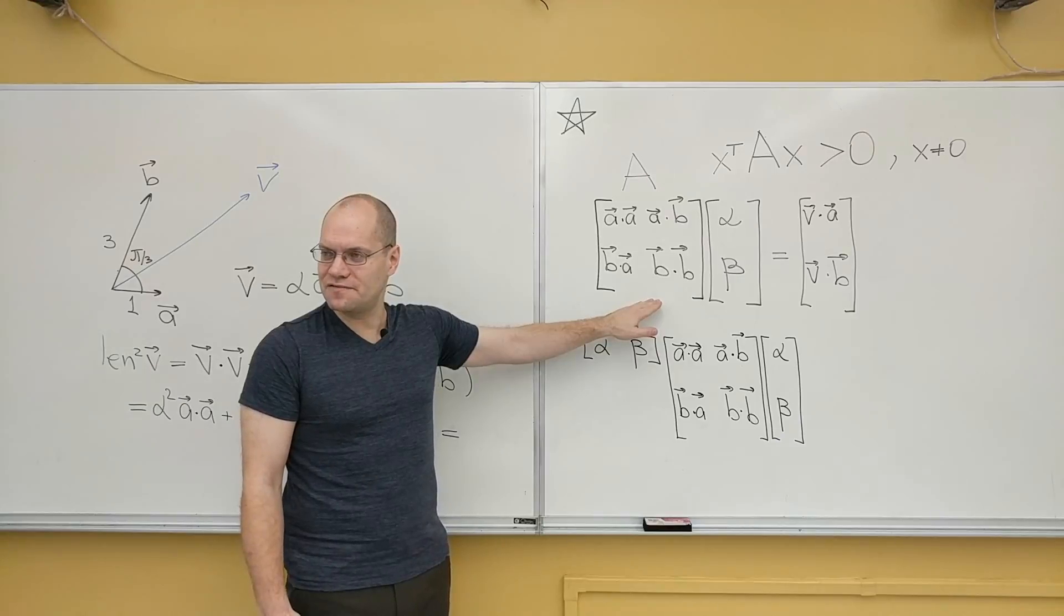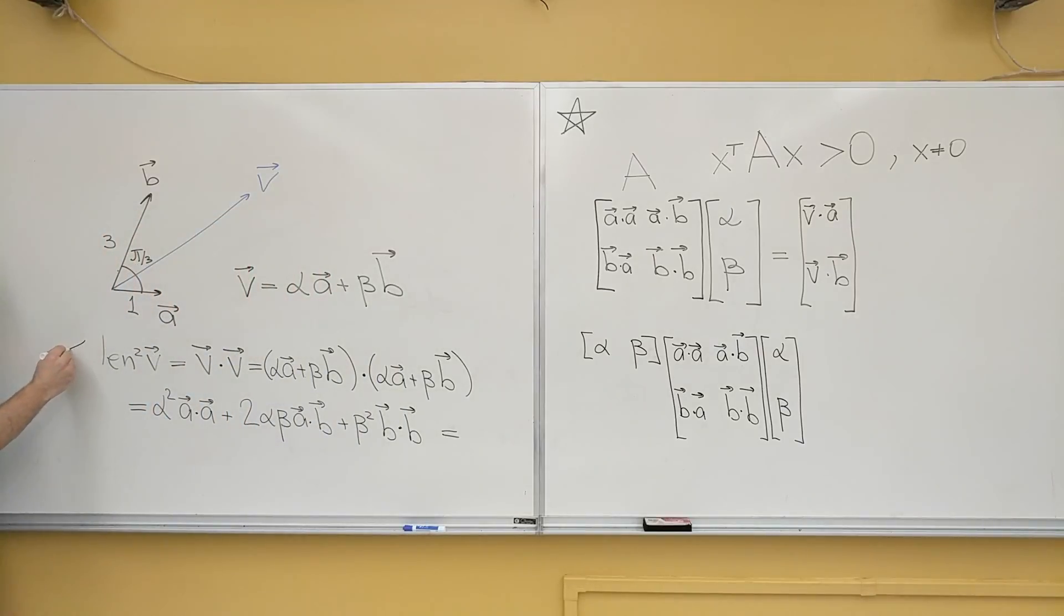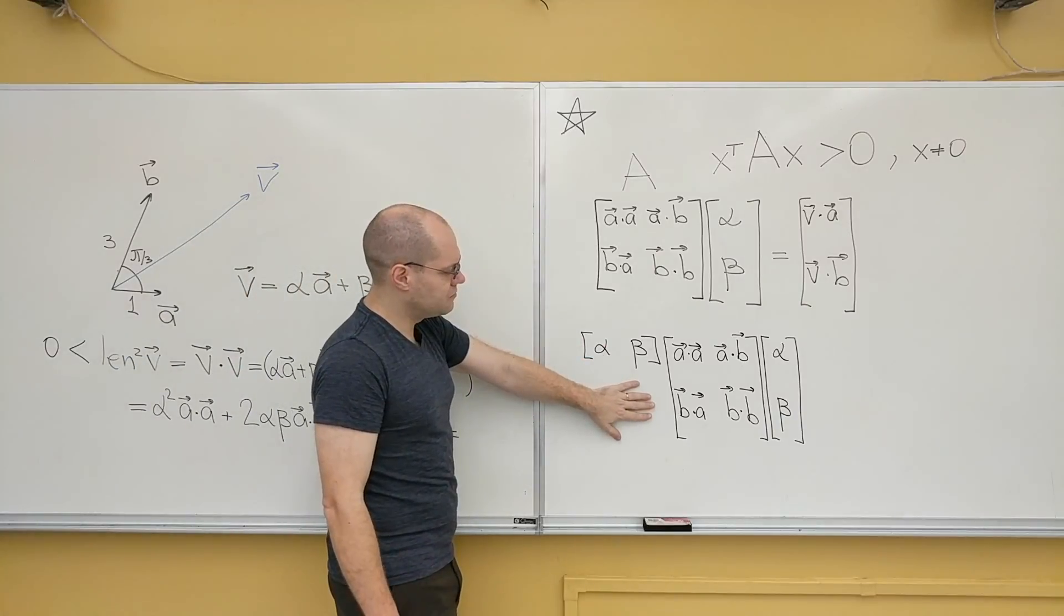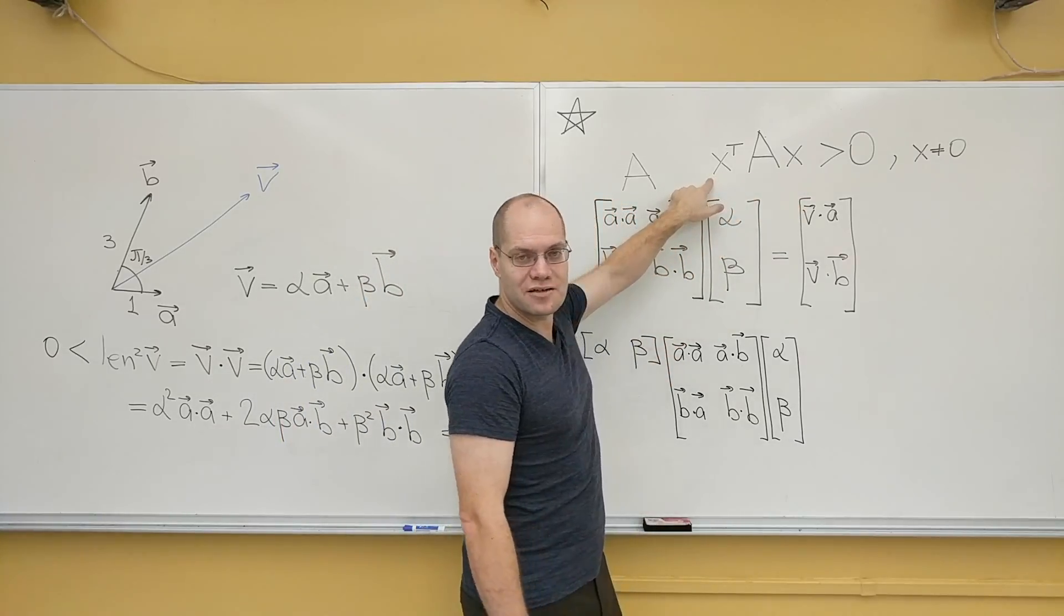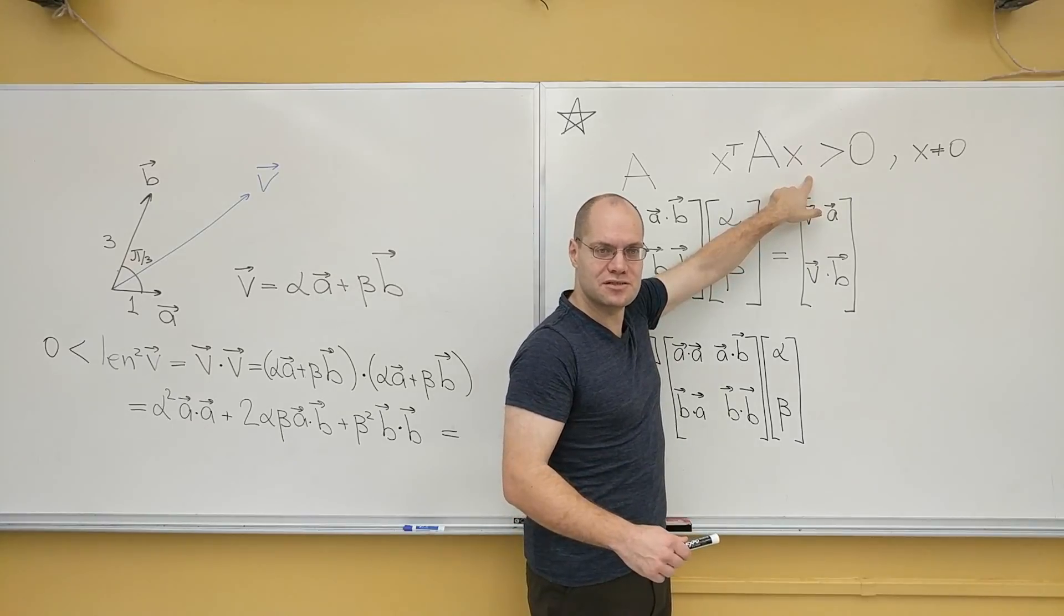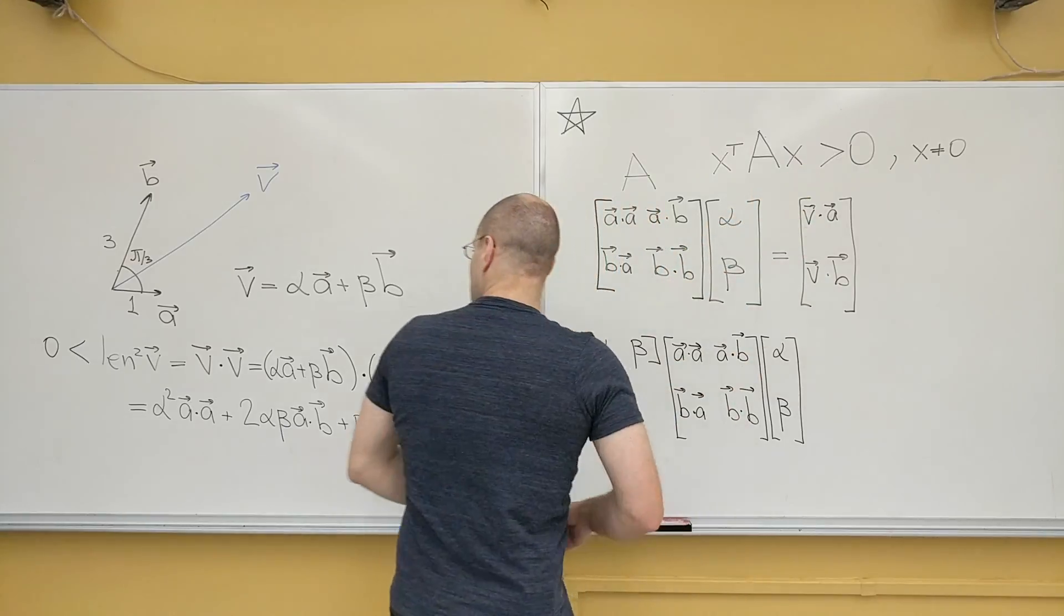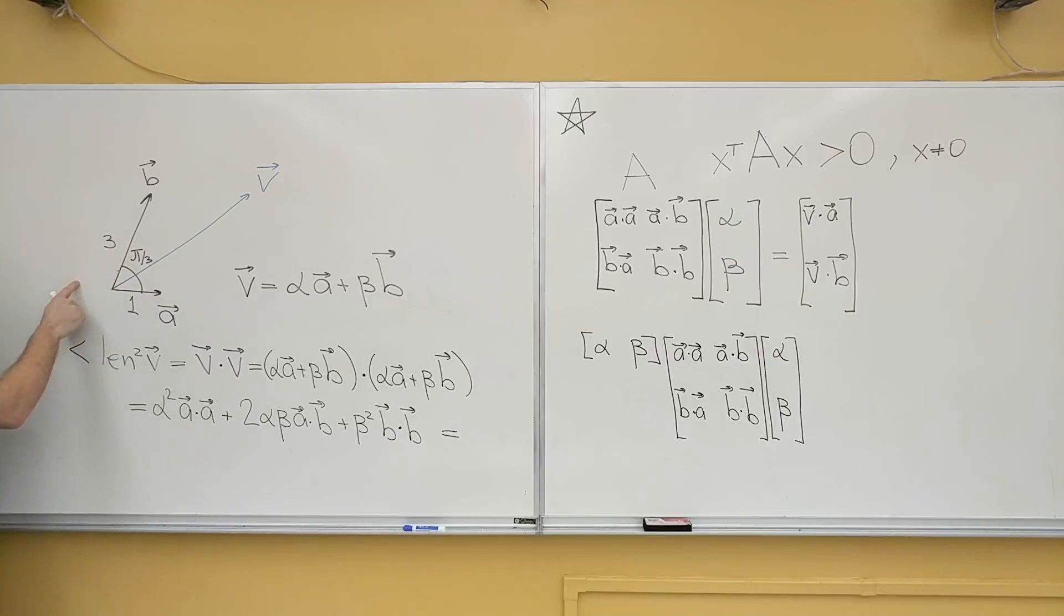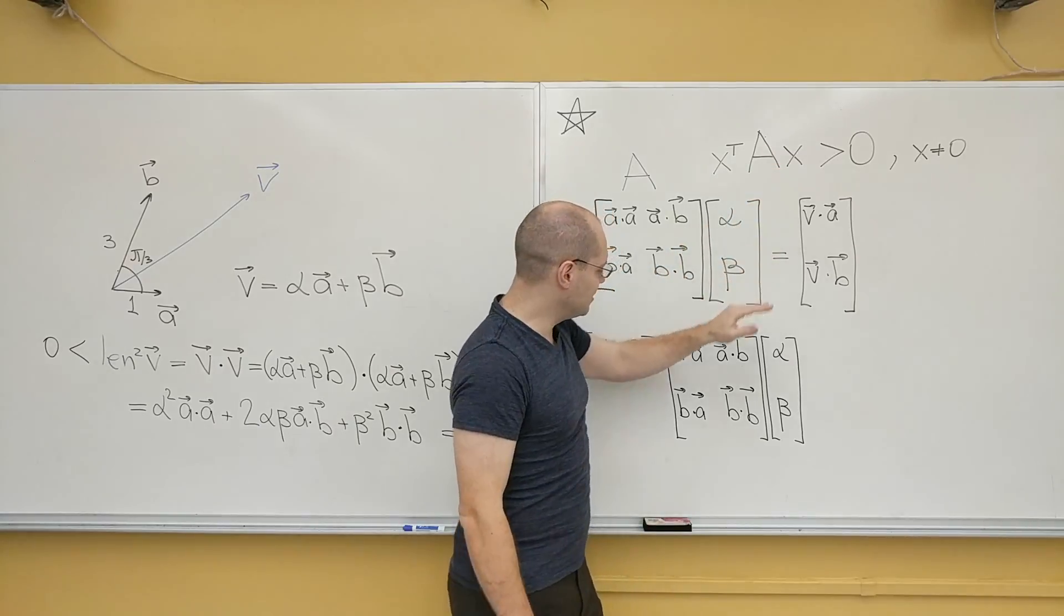Because what this is an expression for is length of V squared, which of course is greater than zero as long as V is not the zero vector. It is its length squared, it's greater than zero, and it equals this product. So now if you do this backwards and you say, all right, let's take any X and consider this product. Well, what this product represents is the length squared of the vector whose components are the entries of X. So if the entries of X are minus one and two, then this represents the length squared of a vector which equals minus one of a plus two of B. It's whatever vector it is, but its length is positive.